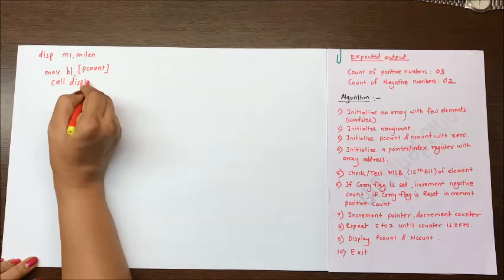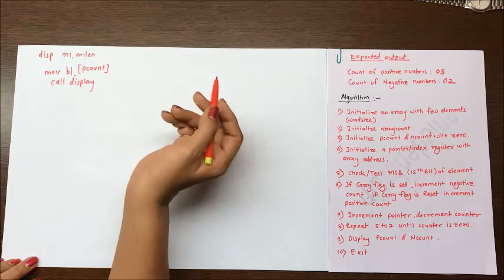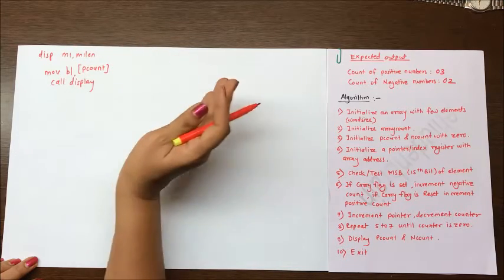Now display is our procedure which converts contents of bl which are 0, 3 into ASCII value 30 and 33.